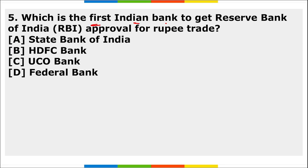UCO Bank - the first bank to receive RBI approval for rupee trade - is highly important. Regarding our content schedule: pocket-wise PDFs and topic-wise PDFs are released on the 7th of every month; weekly current affairs every 7 days; monthly current affairs and top 100 questions PDF on or before the 10th of every month.